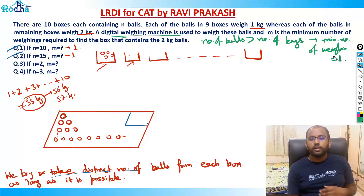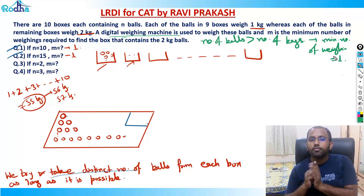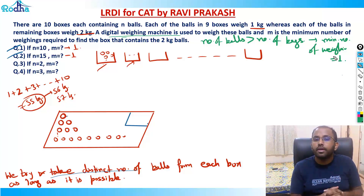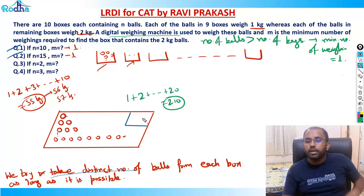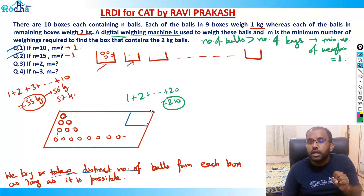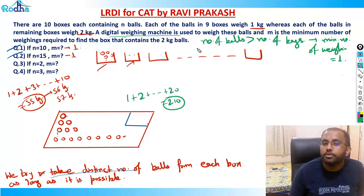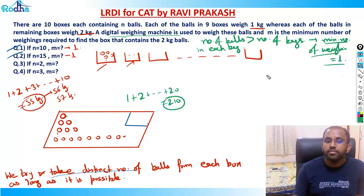For example, if we have 20 bags with 25 balls each, from the first bag I pick one, from the second two, up to 20 from the 20th bag. The summation of 1 to 20 is 210 kg — that's the ideal weight. If it's 211 kg, the first bag is faulty; if 215 kg, the fifth bag is faulty. So whenever number of balls exceeds number of bags, minimum weighings equals one.